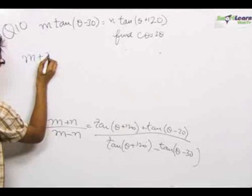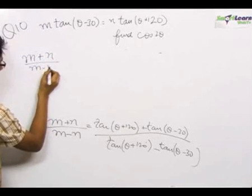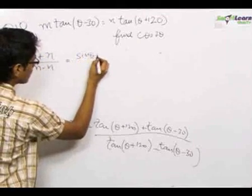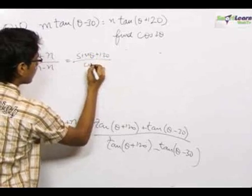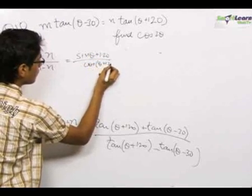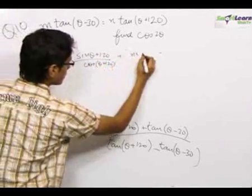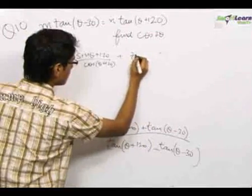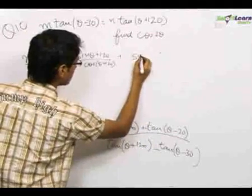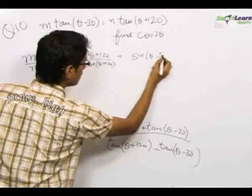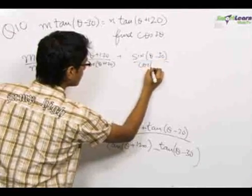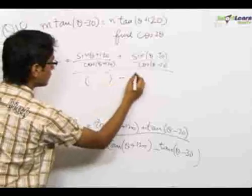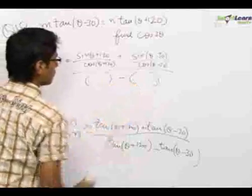Now we can convert the tan expressions into sin and cos. The numerator becomes sin(θ + 120°) upon cos(θ + 120°) plus sin(θ - 30°) upon cos(θ - 30°), and similarly for the denominator.